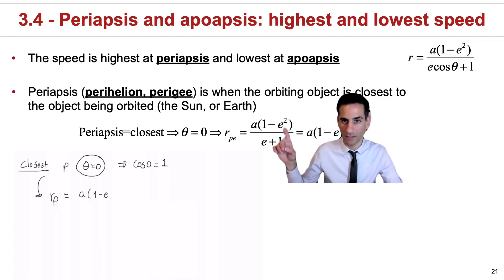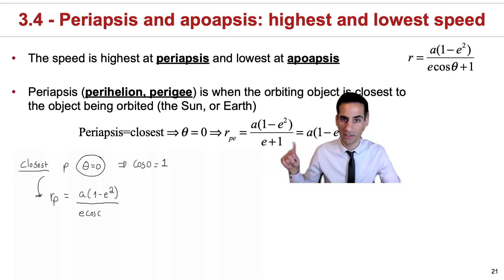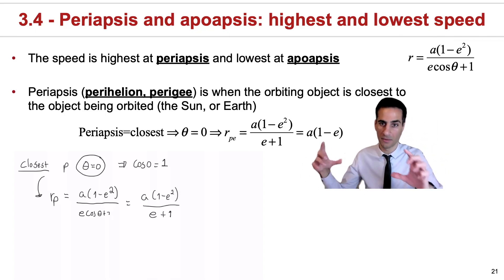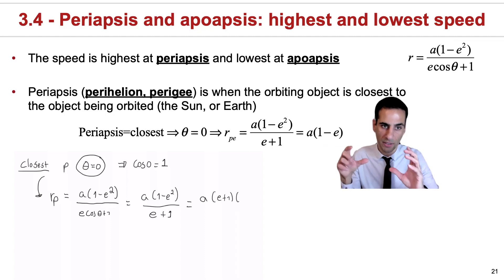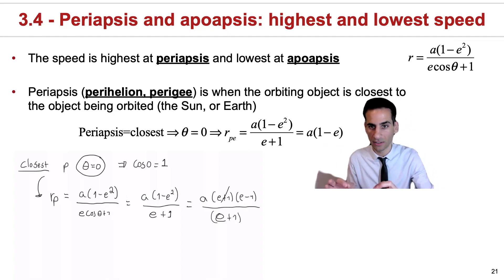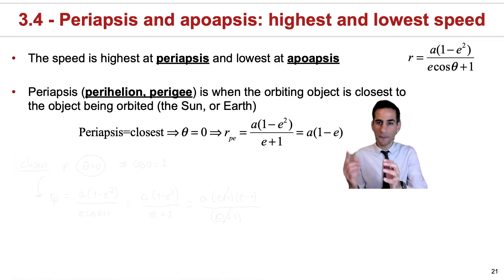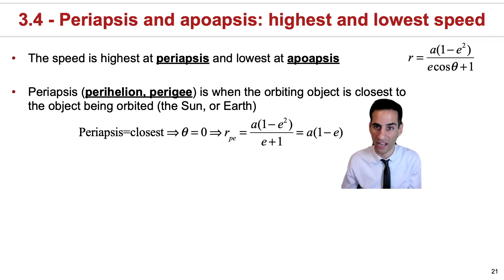can be re-expressed as (e plus one) times (e minus one), which cancels out with this term. And you can finally write it just as a times one minus e. So the periapsis, or the closest point to the object that something is orbiting, will depend on the eccentricity. You can see very clearly that if the eccentricity is zero, you just recover a.